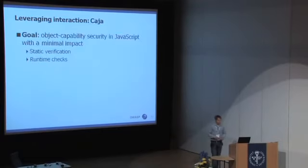Caja is basically a Google project which provides object-capability security in JavaScript while trying to make as few changes to the language as possible.